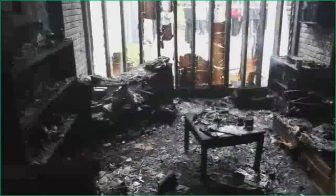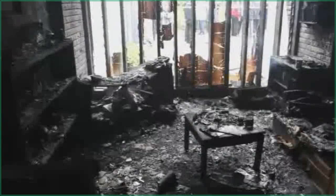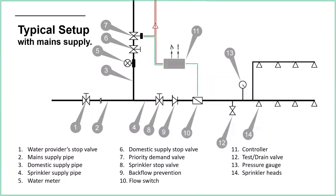Sprinklers in care homes and residential buildings — it's a really powerful message to spread. Let's look at a few system setups. This is a typical setup with a town main supply. The town main comes in from the left into an isolation valve, then branches off — the domestic supply goes one way for toilets, showers, sinks, etc., and the fire sprinkler water goes another. The domestic supply is metered; the sprinkler water is unmetered.